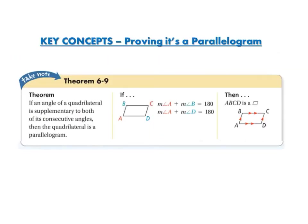The next theorem for proving a quadrilateral is a parallelogram: if an angle of a quadrilateral is supplementary to both of its consecutive angles, then the quadrilateral is a parallelogram. Remember, supplementary means 180 degrees. So if we look at angle B and add it to angle A, or add it to angle C, and they equal 180, then we know it is a parallelogram.